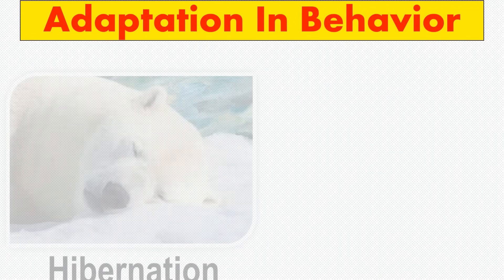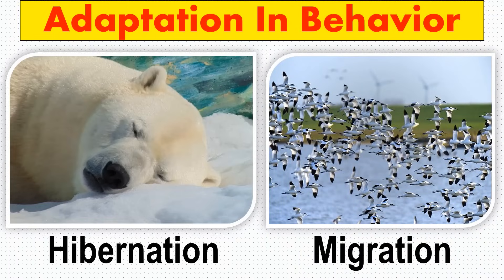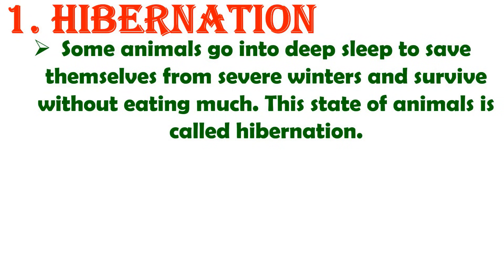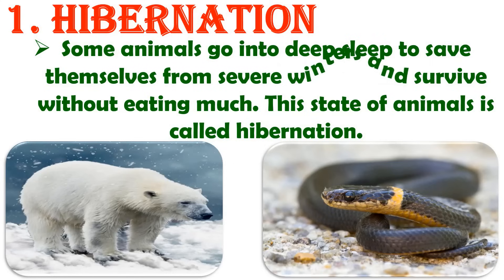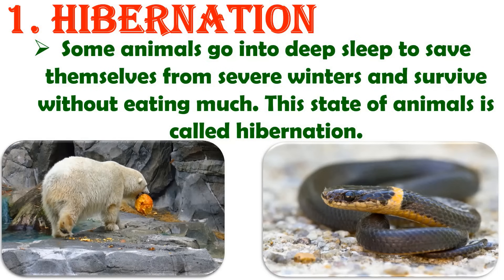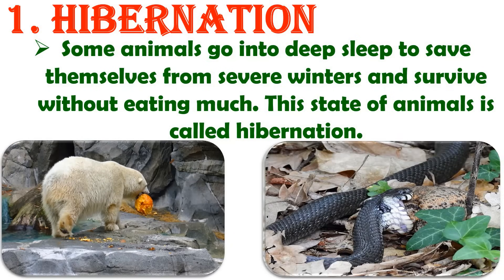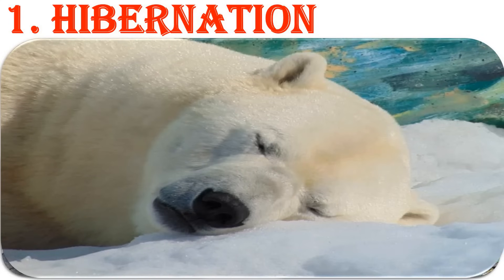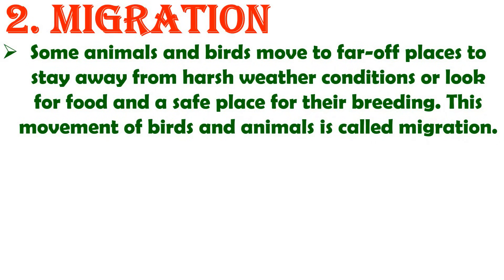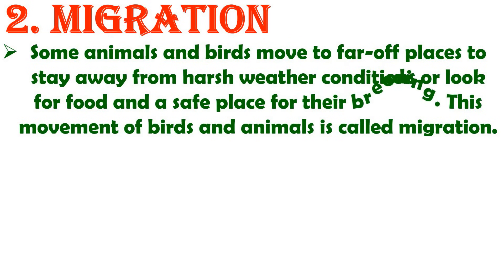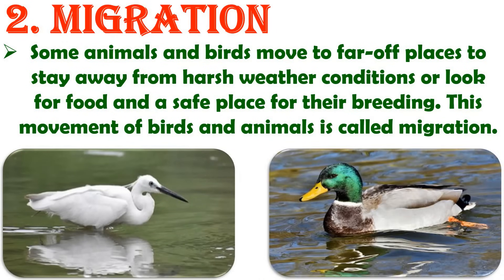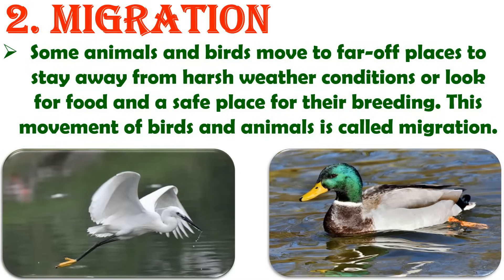Some animals have different types of behavioral adaptation to survive in extreme weather conditions. The first is hibernation — some animals go into a deep sleep to save themselves from severe winter and survive without eating much. This state is known as hibernation. Animals like bears and snakes eat more food than usual during autumn and store it as fat to use during winter when they go into hibernation. The second is migration — some animals and birds move to faraway places to stay away from harsh weather or to look for food and a safe place to breed. This movement is known as migration. For example, Siberian cranes and mallard ducks visit India every winter and return to their native places when winter ends.